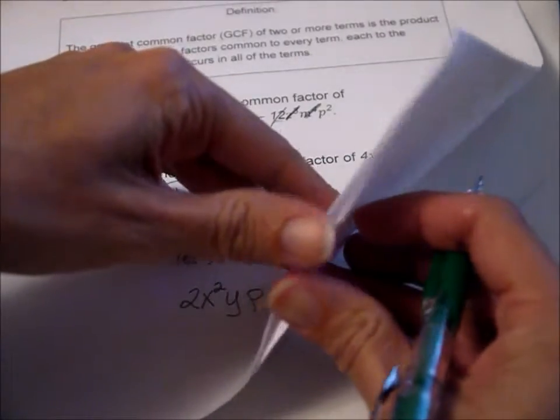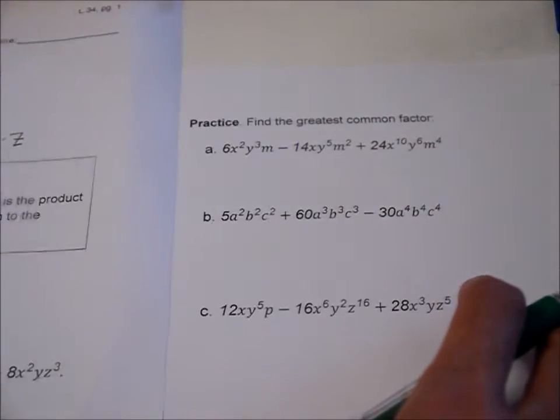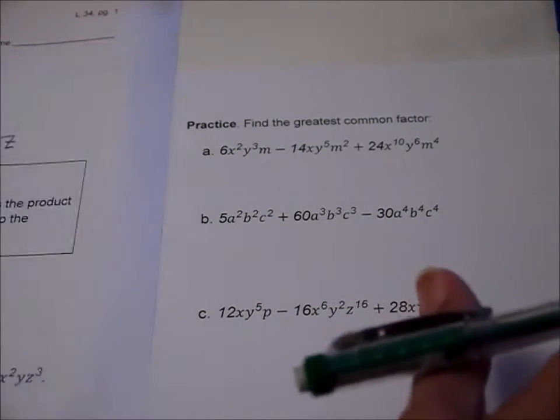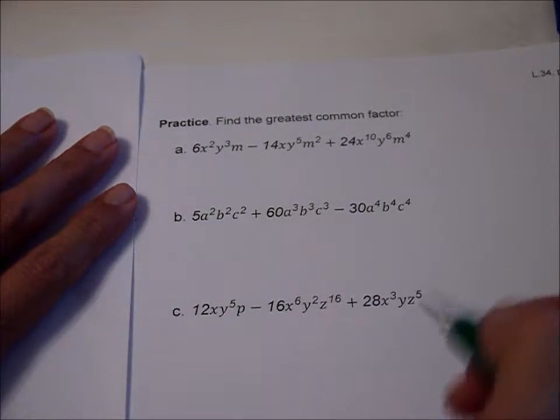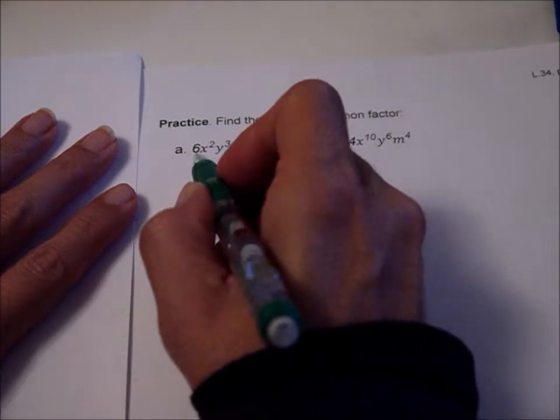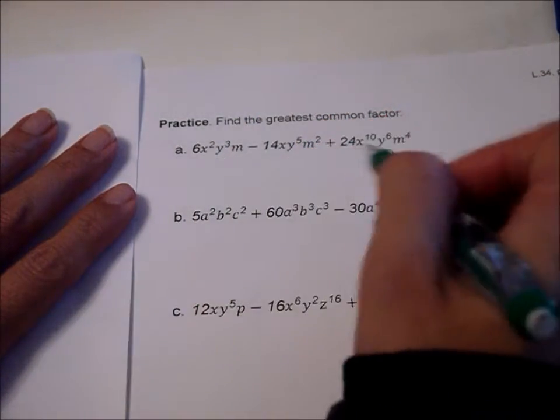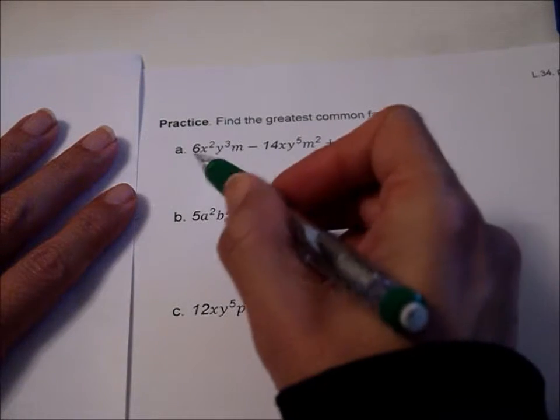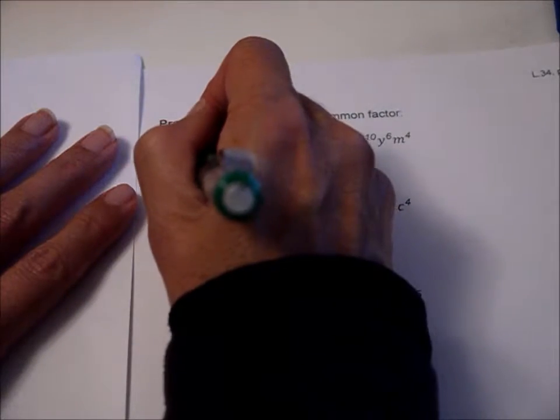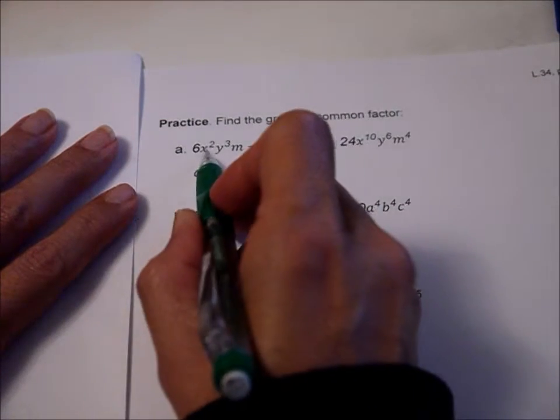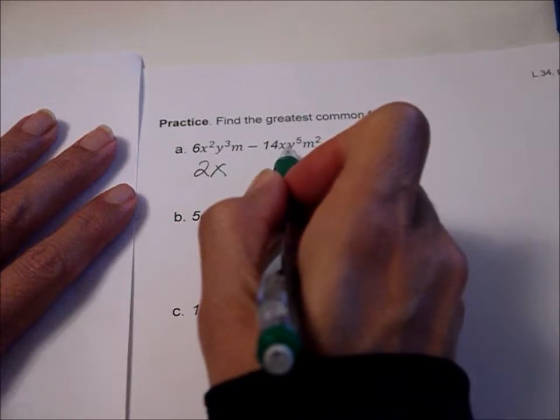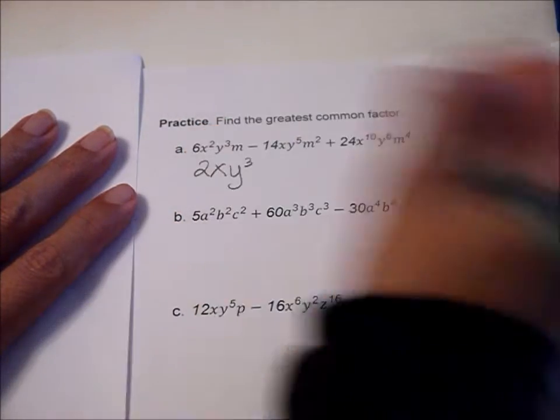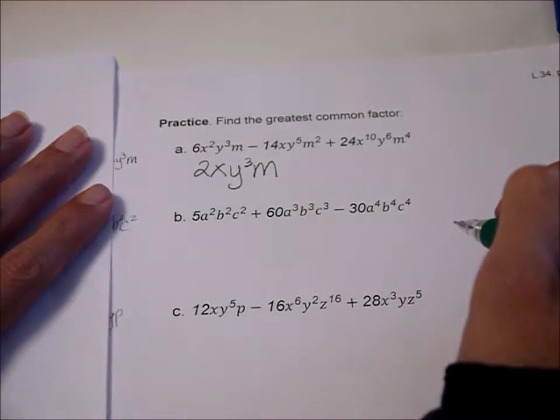And we have our practice. Now, we'll go ahead and cover up the answers there just so I make sure. Go ahead and do these and check your answers in the book. If you get stuck, come back and watch the video and begin. So I see 6, 14, and 24. Well, 6 goes into 24, but it does not go into 14. In fact, 2 is the only factor that goes into everybody. So it's a 2. Then we look for the smallest number of x's really, which is x. And we have y³ and m.